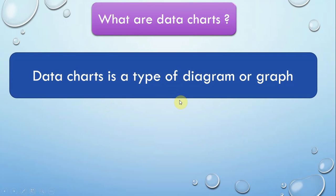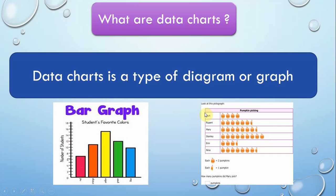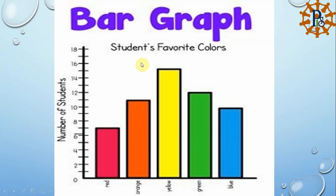A data chart is a type of diagram or graph. In this lesson we are going to learn two types of graphs: the bar graph, which has rectangles — each rectangle is called a bar, so this shape is called a bar graph. And we also have the pictograph, where we use pictures to represent data.